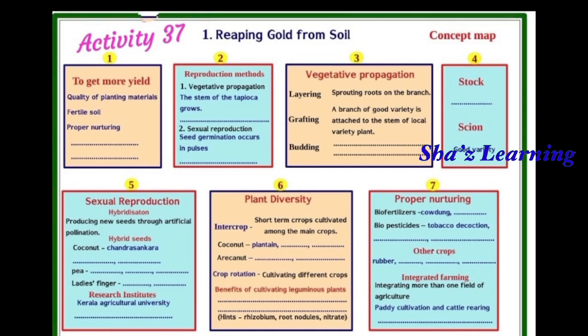Now, vegetative propagation. We will learn three methods: layering, grafting, and budding. Layering means sprouting roots on the branch.